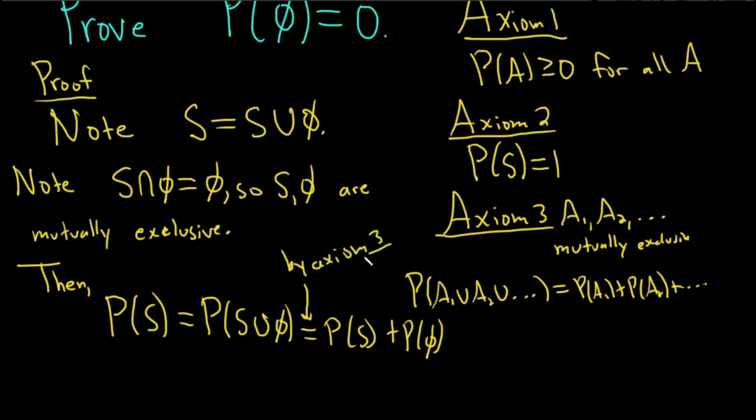Super important. It's always important to indicate where you use the axioms when you're doing these problems. So here we used it because we know that these are mutually exclusive events. We have a union so we can break up this probability into two different probabilities.